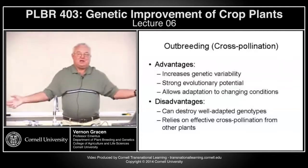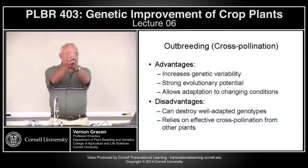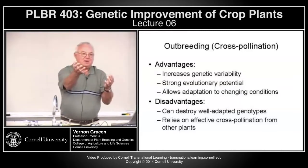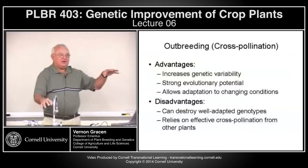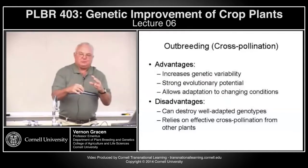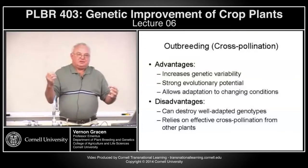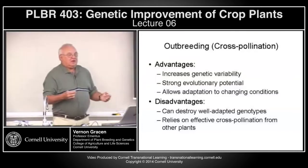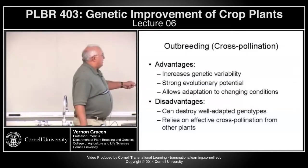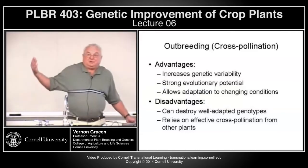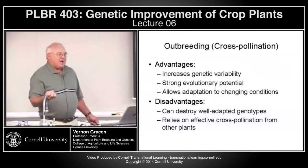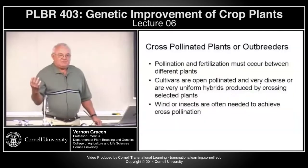If you self-pollinate an ideal heterozygous plant, you get segregation of all sorts of combinations and never reproduce that same heterozygous genotype. If you cross it with something else, you get a whole bunch of different combinations. Unless you can use vegetative propagation, maintaining a well-adapted genotype in cross-pollinated plants is very difficult. A single isolated cross-pollinating plant doesn't have much chance of surviving.